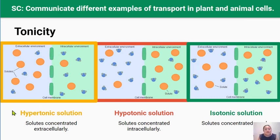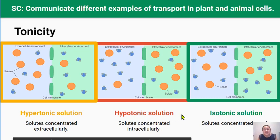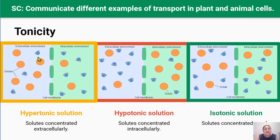We have three different types of tonicity: a hypertonic solution, a hypotonic solution, and an isotonic solution. A hypertonic solution is a solution that has a higher concentration of solutes on the outside than on the inside of the cell — you can see there's more solutes on the outside than on the inside. So there are many solute particles and fewer water molecules in the solution. Hypertonic solutions are very concentrated solutions.